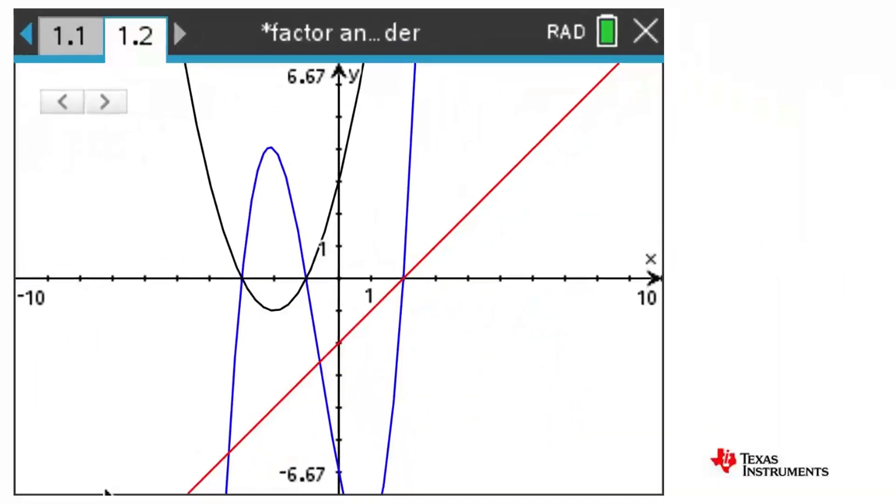We can use algebra to confirm that our quotient is indeed a quadratic. For the moment, let's assume that it is.